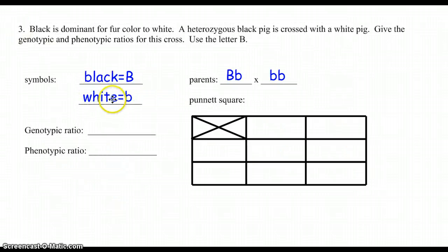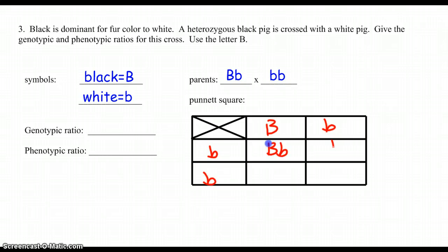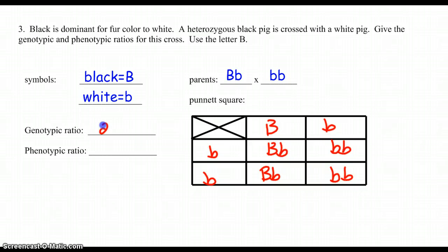Number three, we're looking at pig color — black dominant over white. One is heterozygous and one is white, or homozygous recessive. Looking at the genetic makeup, I've got two that are big B, little b, and the other two are homozygous recessive — so a two to two ratio. Looking at the first letter of each: two with the uppercase B combination, and two with lowercase b as the first letter. Remember, they do not have to be the same — they may be different, so don't be fooled by that.